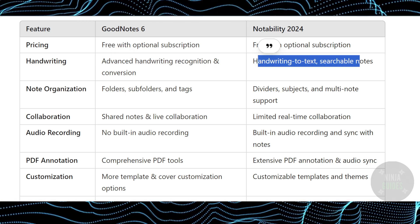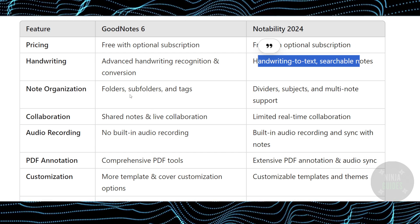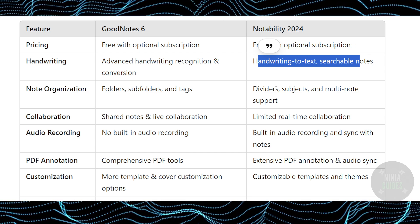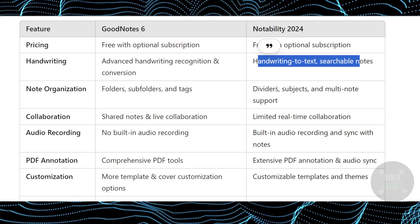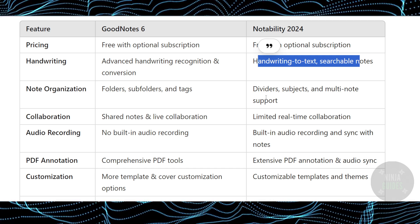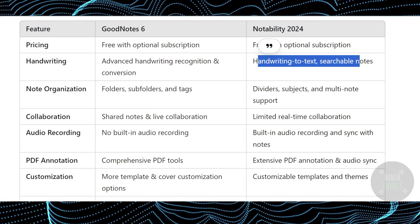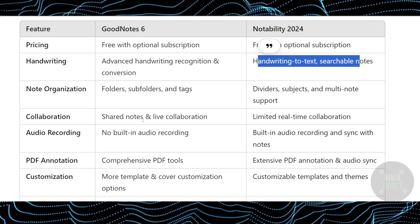For note organization, GoodNotes 6 provides folders, subfolders, and tags, while Notability gives you divided subjects and multi-note support. For collaboration, GoodNotes 6 gives you shared notes and live collaboration.